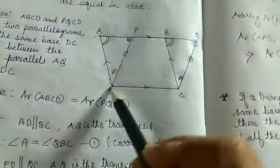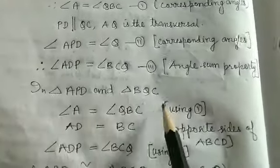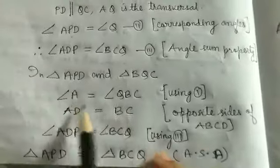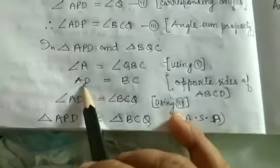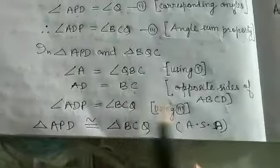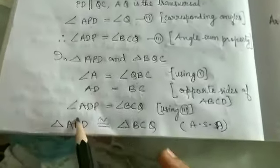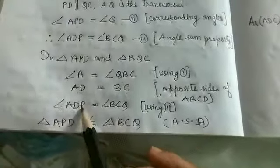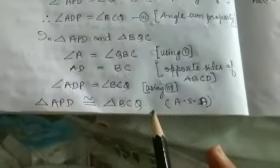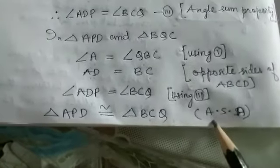Now in triangles APD and BQC: angle A equals angle QBC (from step 1), AD equals BC since opposite sides of a parallelogram are equal (step 2), and angle ADP equals angle BCQ (step 3). By Angle-Side-Angle (ASA), triangles APD and BQC are congruent.